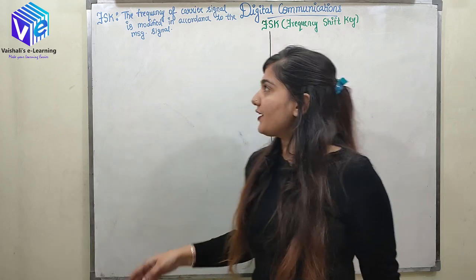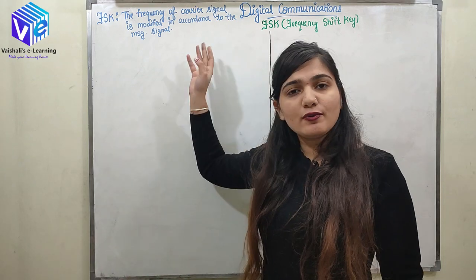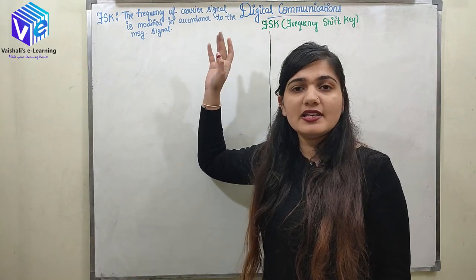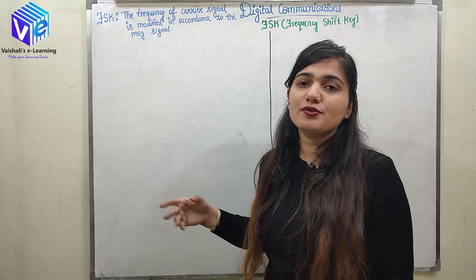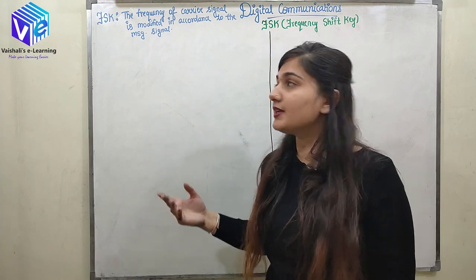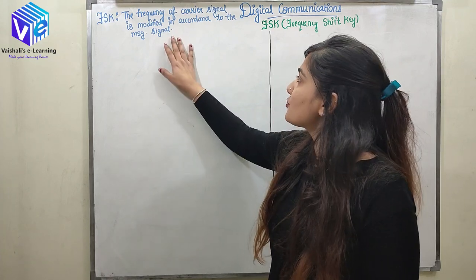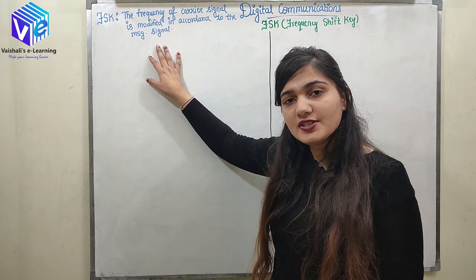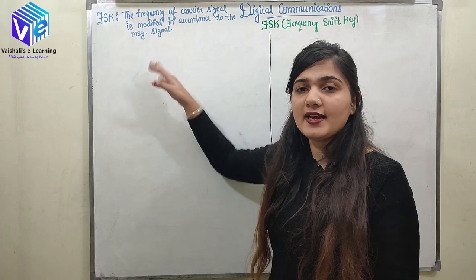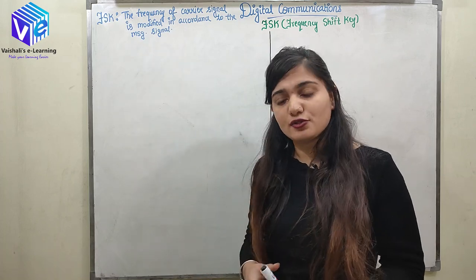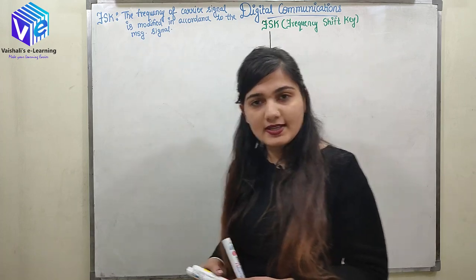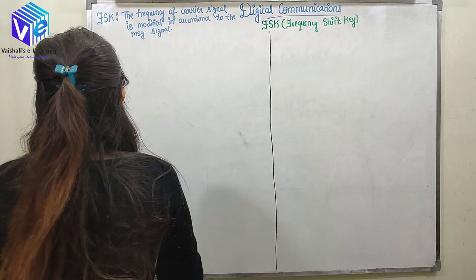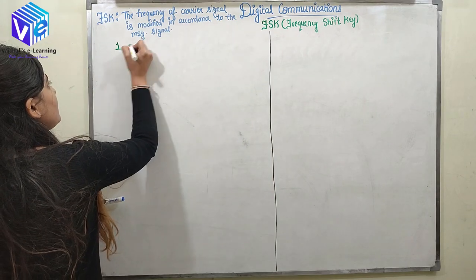According to the definition of FSK, the frequency of the carrier signal is changed in accordance with the message signal. When the message signal changes, the frequency of the carrier is also changed. Let's see this with the help of an example.